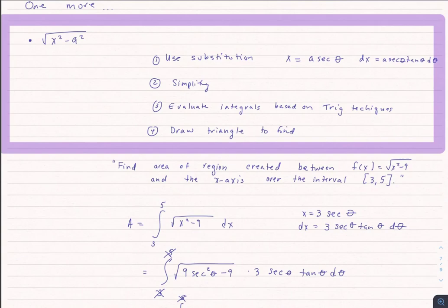One more case. The third form is the square root of x squared minus a squared. Before, with a squared minus x squared, we used the substitution of sine. Now, for x squared minus a squared, we're going to use the substitution of secant: x equals a secant theta. We'll simplify, evaluate integrals based on trig techniques, and draw a triangle.